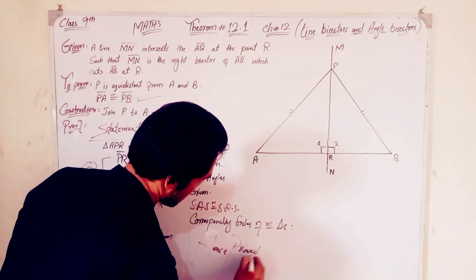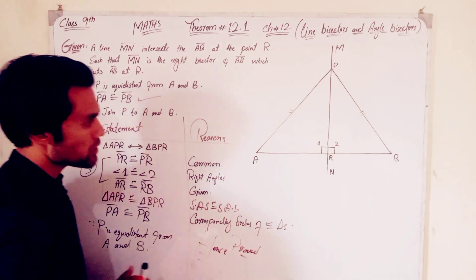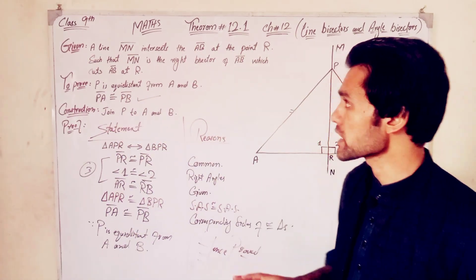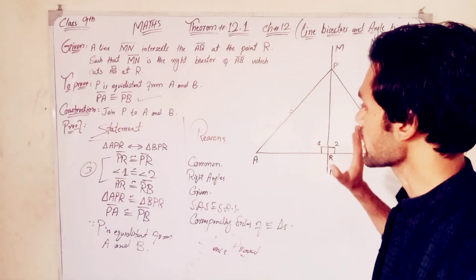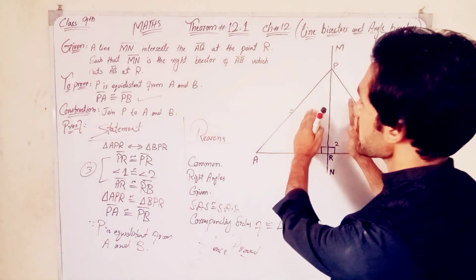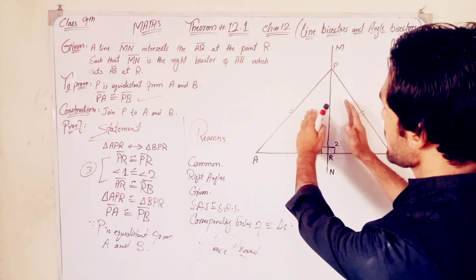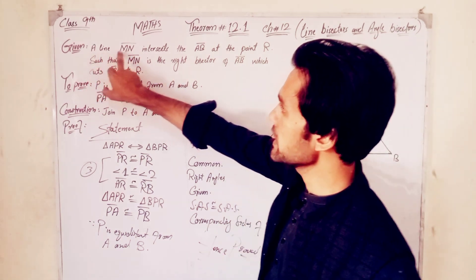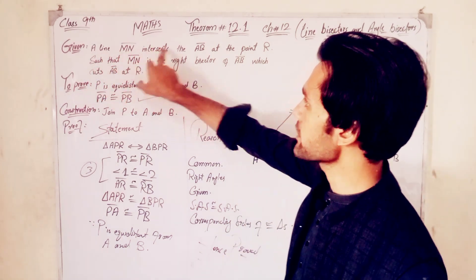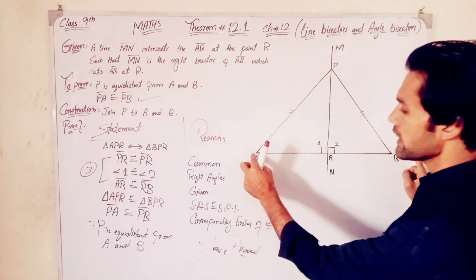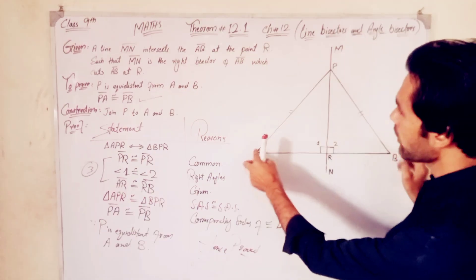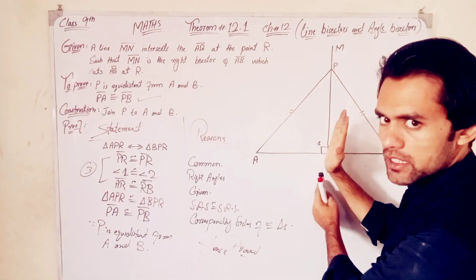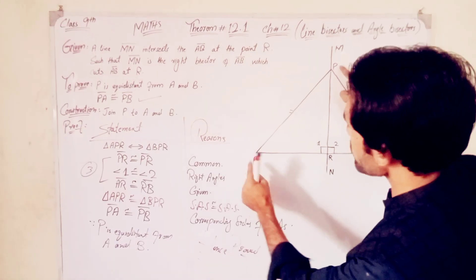Hence, the important theorem is proved. Some problems use the right bisector this way — given that MN intersects line AB, when you use the right bisector with the right bisector.